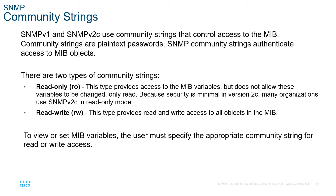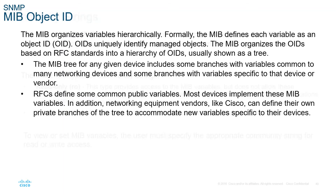Versions 1 and 2c use community strings — plain text passwords — to authenticate access to MIB objects. There are two types: read-only (minimal access, commonly used in v2c organizations) and read-write (full access, like an administrator having access to everything).